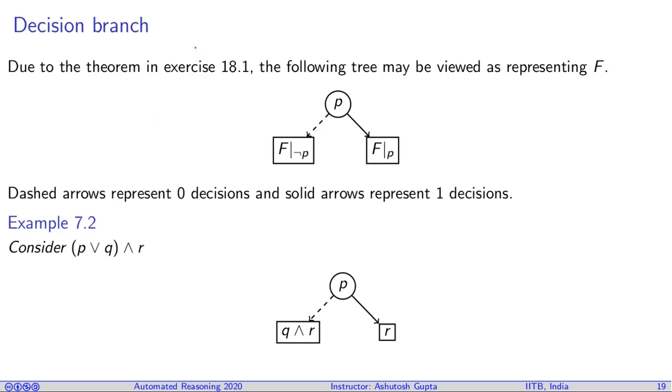Decision branch. We have seen that we can project formula on partial assignment. Let's suppose we have a formula F and a variable P, and we project the formula on not P and put it in one node and project it on P and put in another node. This we will call decision branch, and it represents the formula F. If P is true then what should be the formula, and if P is not true then what should be the formula.